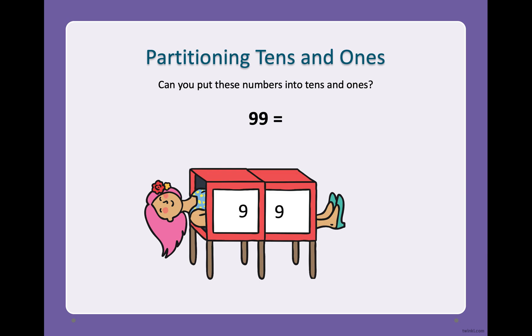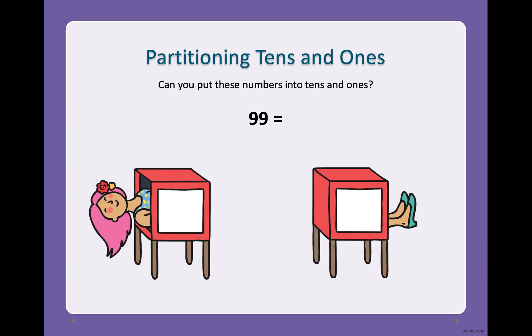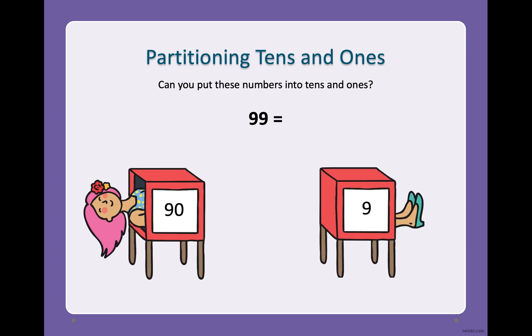Let's do another one. We have the number 99. If we separate it, abracadabra, we have 90 and nine. Right, 90 is nine groups of ten. So we say nine tens and nine ones.